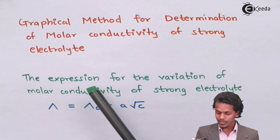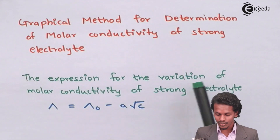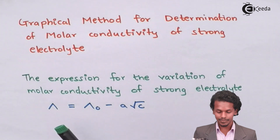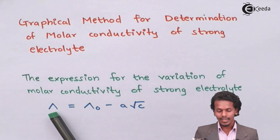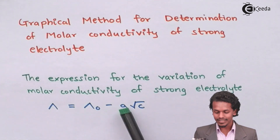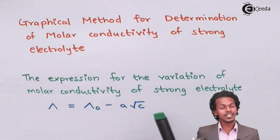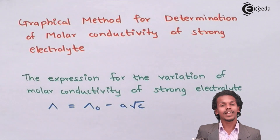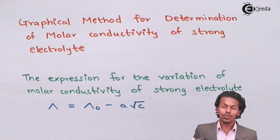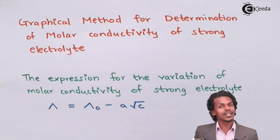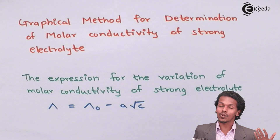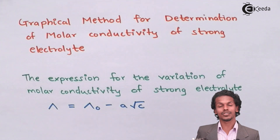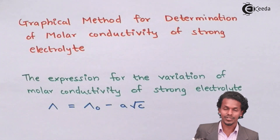The expression for the variation of molar conductivity for a strong electrolyte is given as: lambda equals lambda naught minus A times root C. Here, A is a constant, and root C is the square root of the concentration of the strong electrolyte solution being measured.